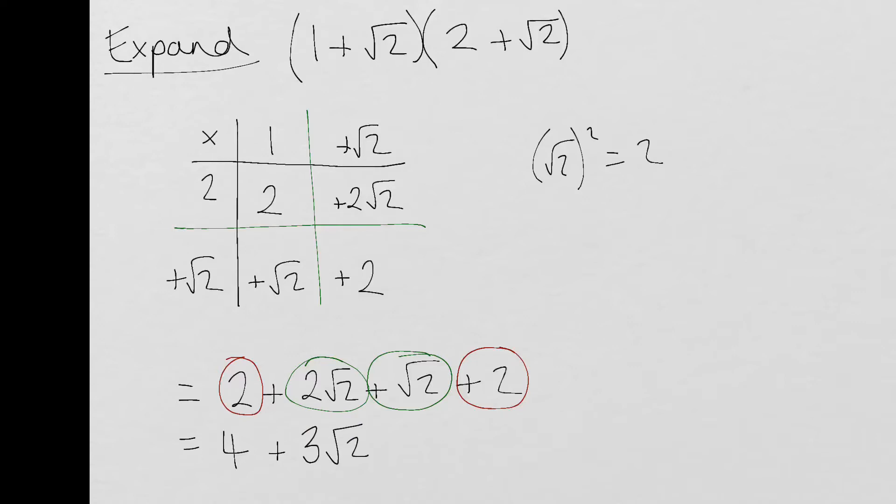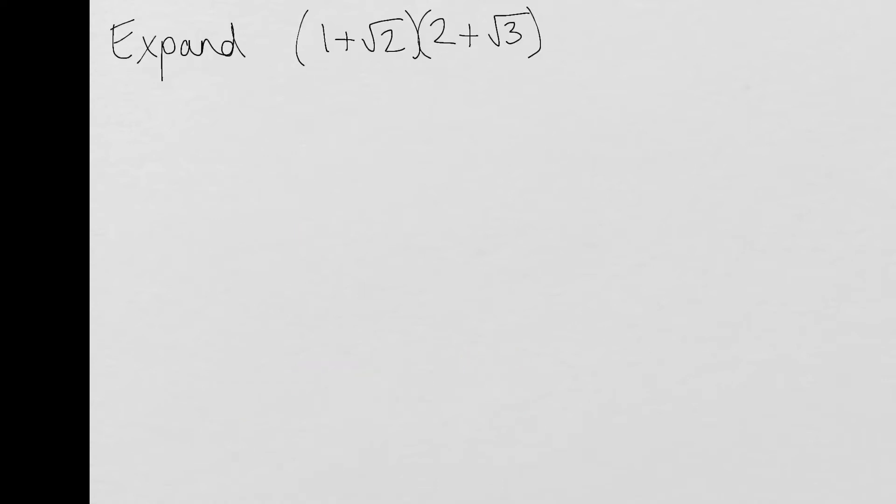So the command word is expand. That means putting it into this grid method and finding your simplified answer. Let's go on to the second example. So this example is slightly different because we've got different values inside the surds. So straight to it. If the word is expand we know that means we're going to multiply it out. So I'm going to put it in slightly differently. So I've got 1 and then positive √2 here. 2 and positive √3 here.